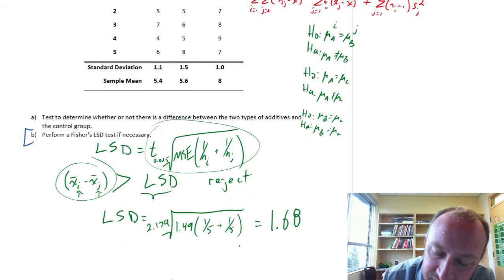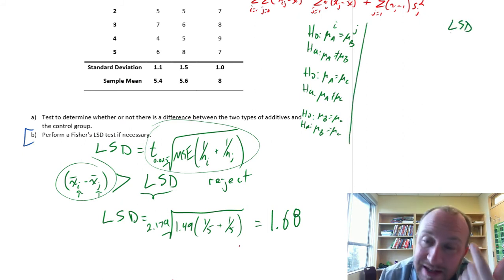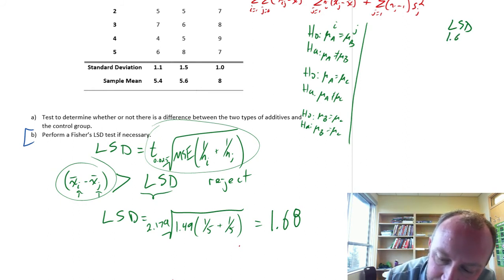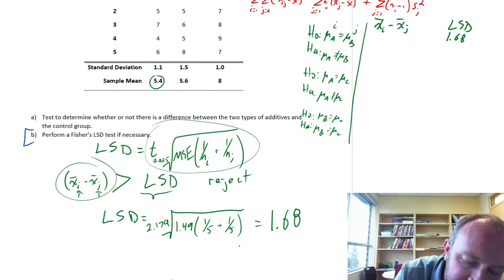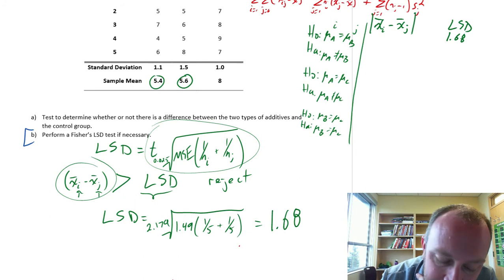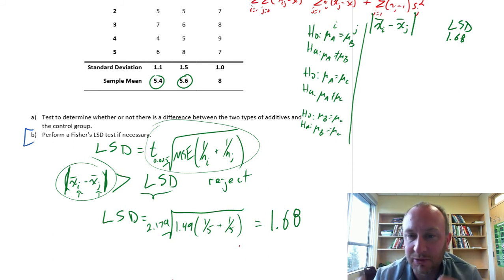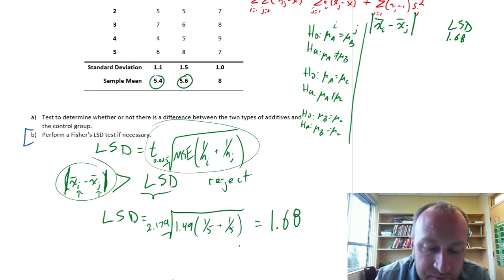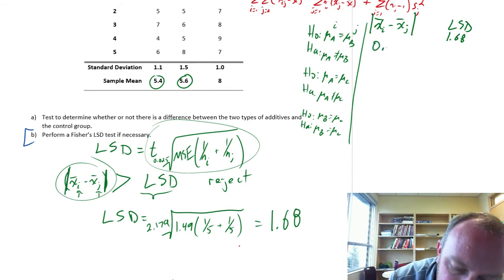Now, for each of these sets of hypotheses, we want to compare the difference in the point estimate of the sample means with a LSD value of 1.68. We'll put in x bar i and j. For this first one, a and b. That's going to be 5.4 and 5.6. I forgot to mention one thing. We compare the absolute value of that point estimate against the LSD. We're just looking at the magnitude of that difference. This first one, 5.4 minus 5.6. Well, that's just going to be 0.2.